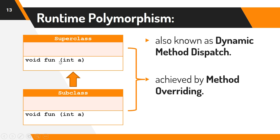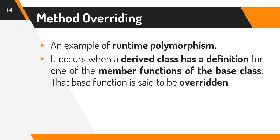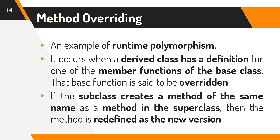Meaning the method 'fun' in the superclass will be overridden by the method 'fun' in the subclass. Method overriding is an example of runtime polymorphism. It occurs when a derived class has a definition for one of the member functions of the base class — that base function is said to be overridden. If the subclass creates a method of the same name as a method in the superclass, then the method is redefined as the new version.